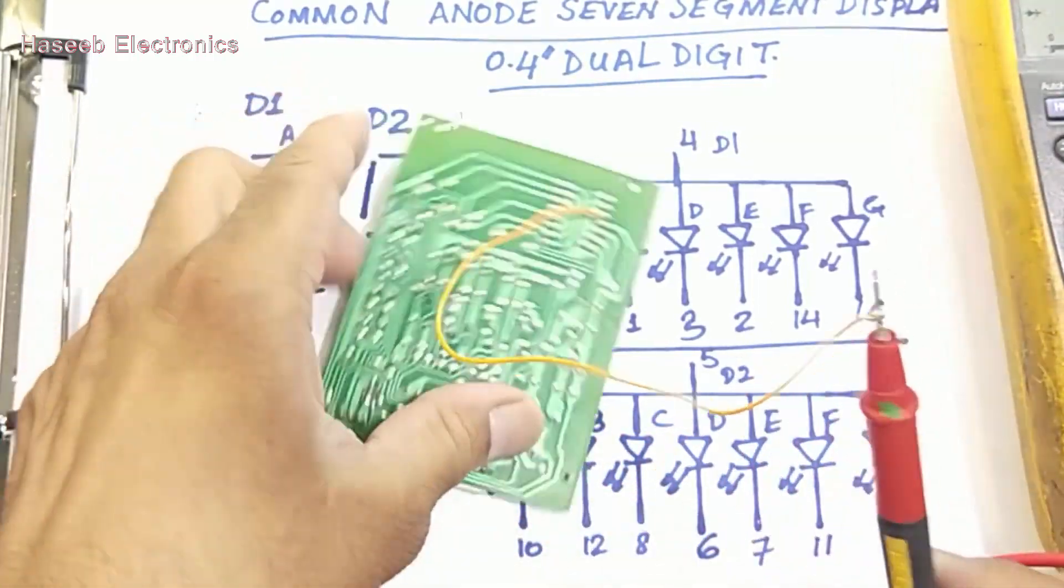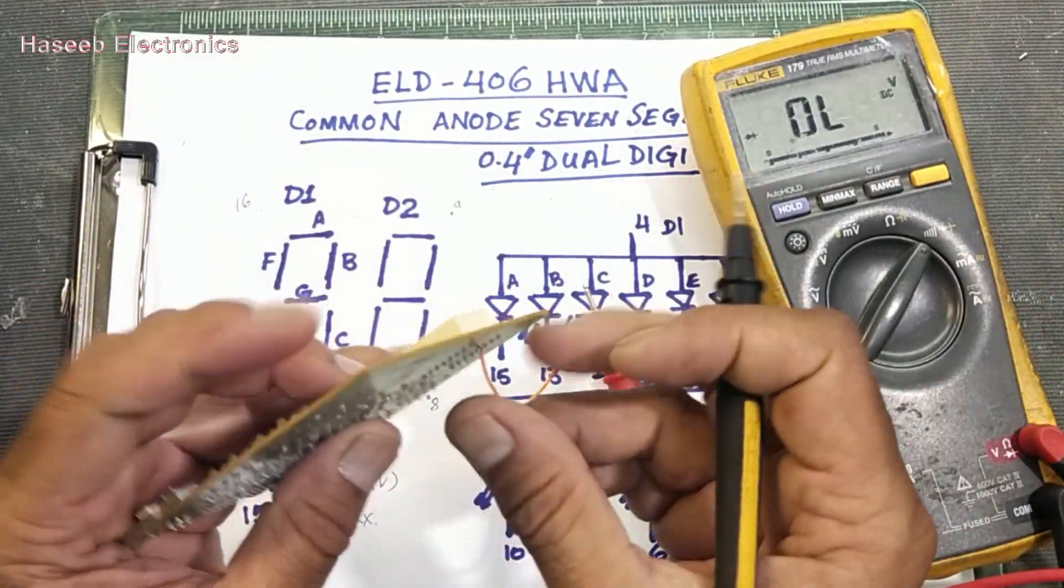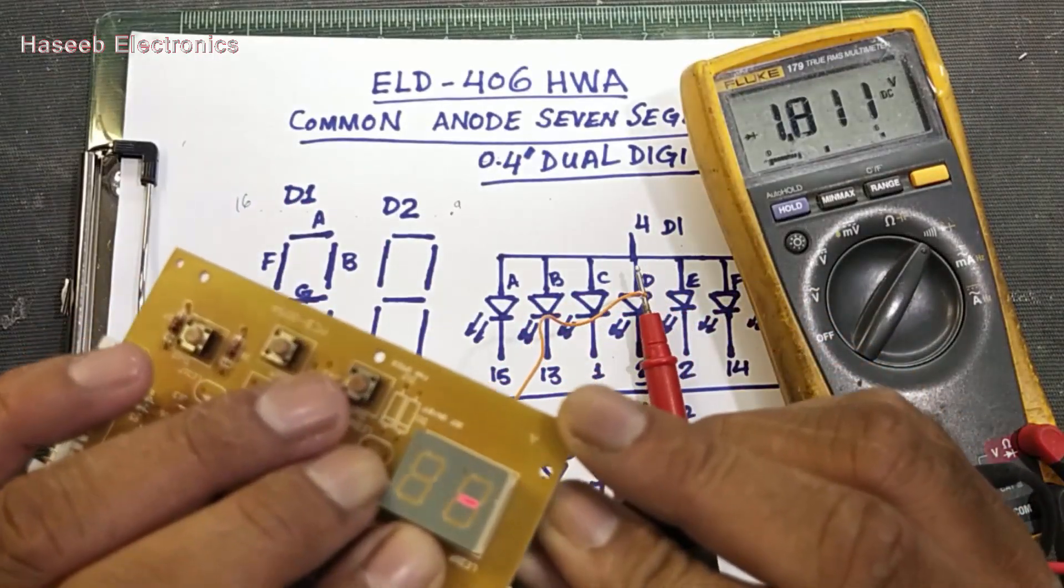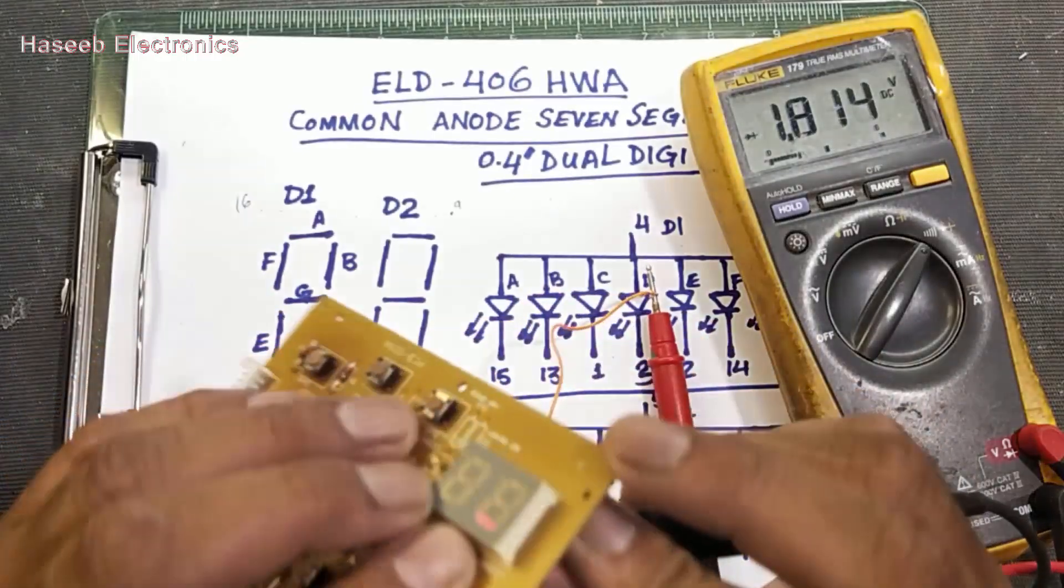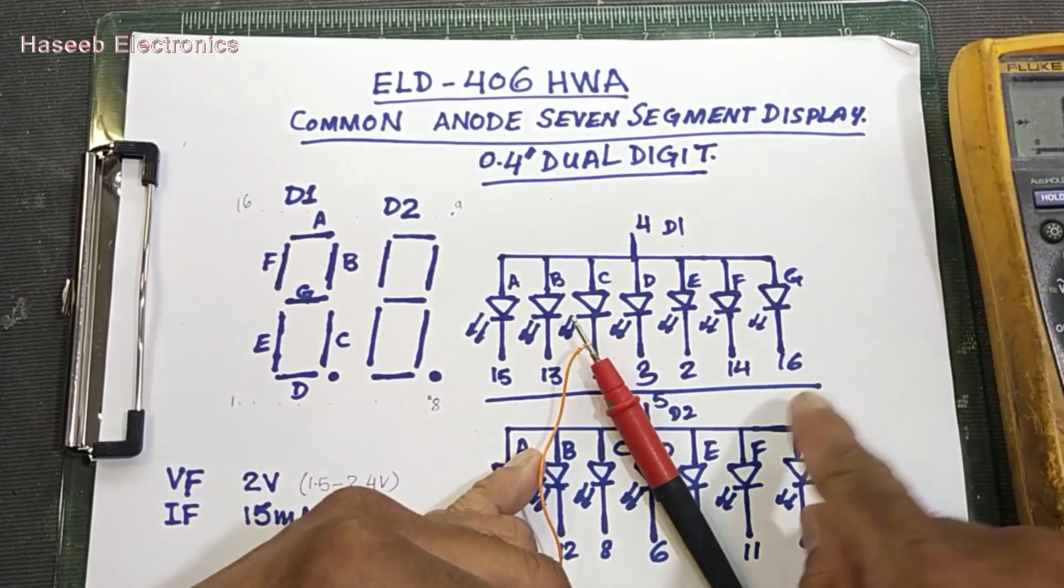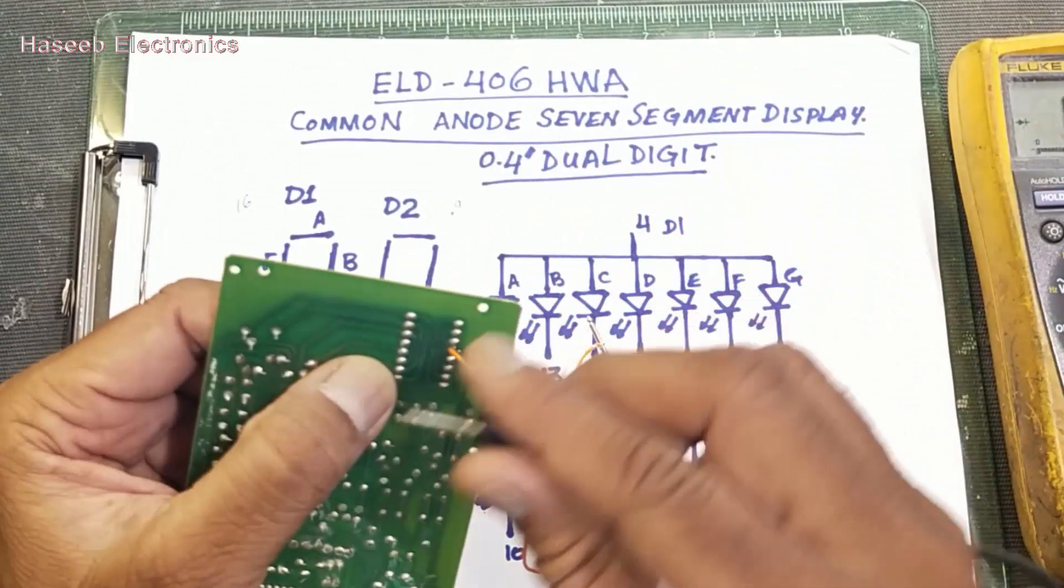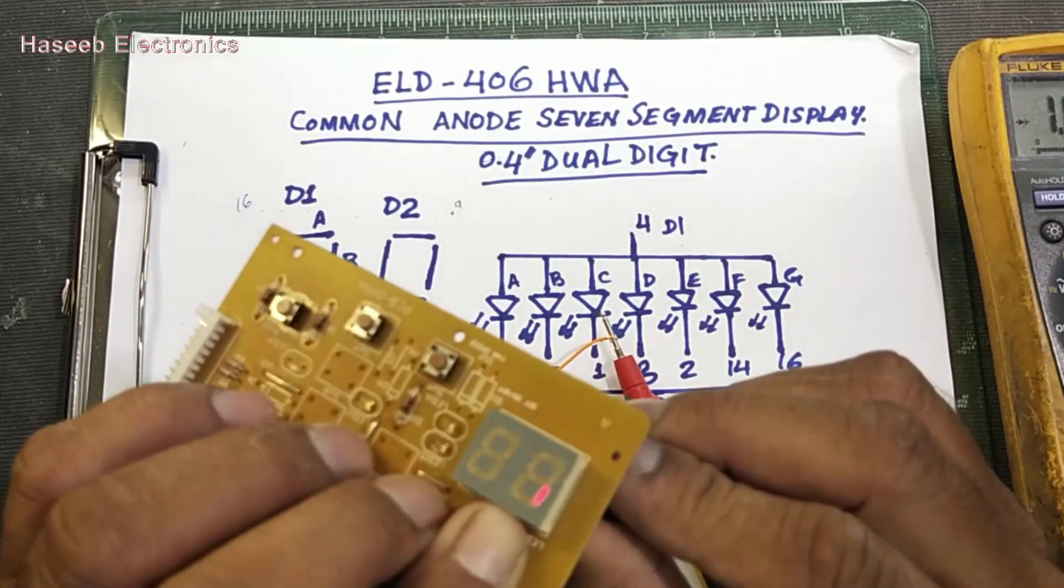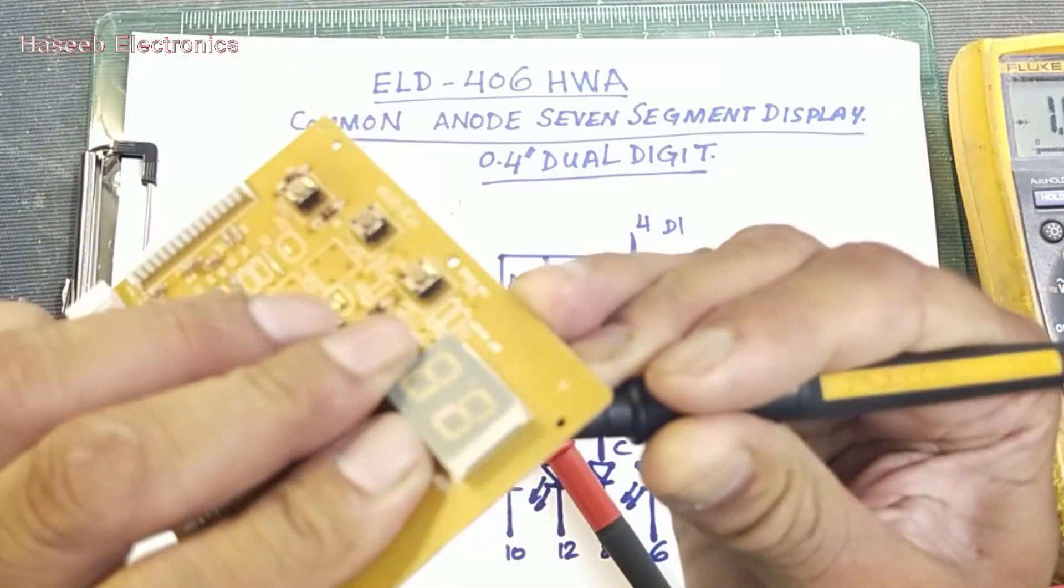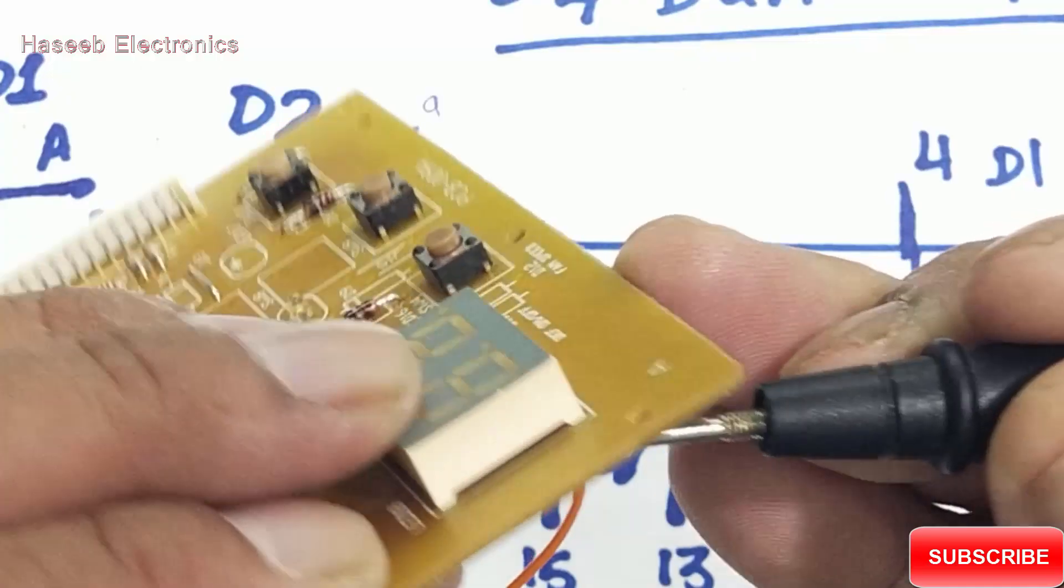Pin number 4 is connected to multimeter positive side. Now black lead connect to pin number 16, the last most, so this segment is on. 15, the first segment A is on. 14, channel F is here, so this segment is on. Now pin number 13, so this segment is on. Now 1, 3, 2, pin number 1.